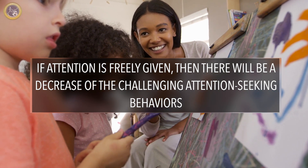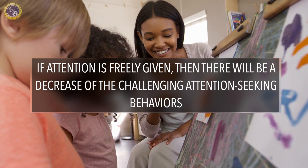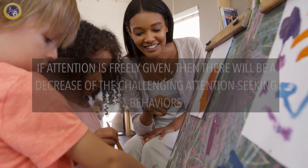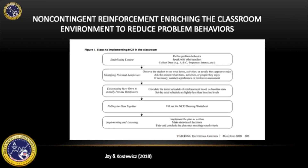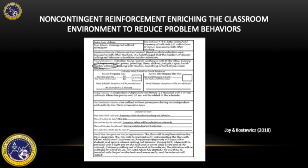If attention is freely given, then there will be a decrease of the challenging attention-seeking behaviors. In the article 'Non-Contingent Reinforcement: Enriching the Classroom Environment Reduces Problem Behaviors,' the author provides a table to represent the five steps to implement NCR in the classroom. It begins with defining the problem behavior and then collecting data on that behavior in order to determine what the schedule of providing NCR will be, and then eventually thinning out the schedule and fading.